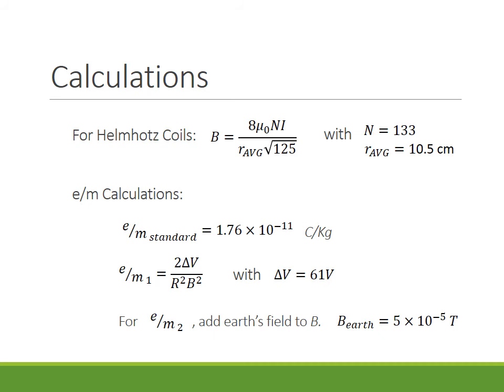For the second one, we'll actually take the Helmholtz coil formula and add to that the Earth's magnetic field that we'll take as five milliteslas. And we'll just assume that that field is in the same direction as the field through the coils as a worst case scenario.